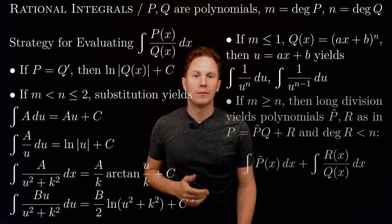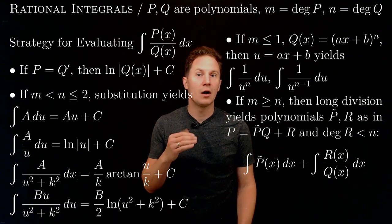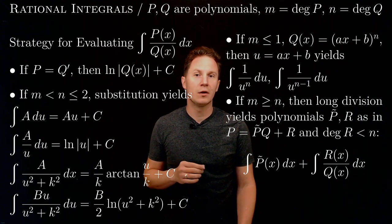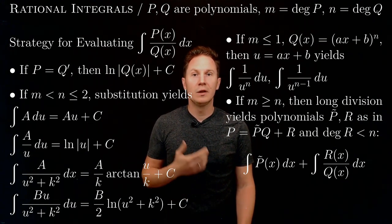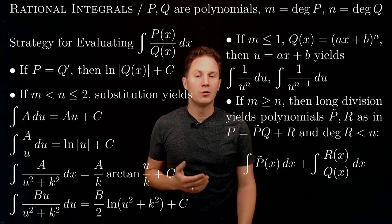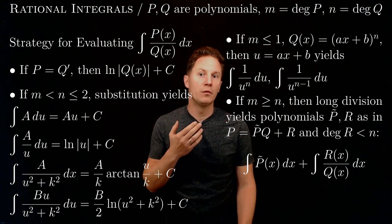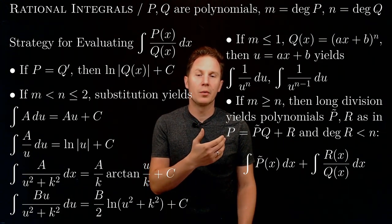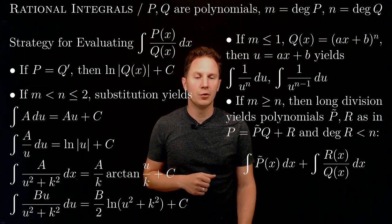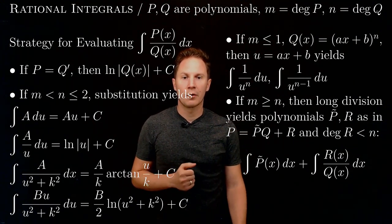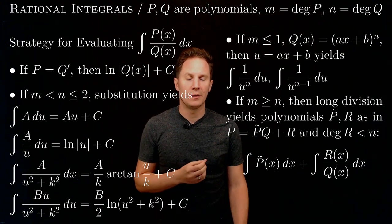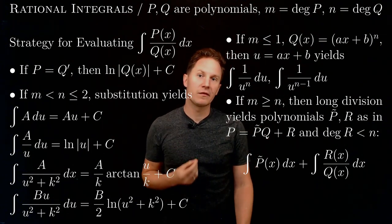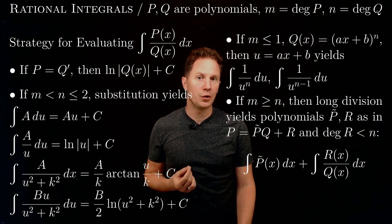If m, the degree of the numerator, is greater than or equal to the degree of the denominator, then we need to do long division to get P over Q be equal to a polynomial plus another polynomial r, the remainder, divided by Q so that our original integral turns into the one you see here, with now the degree of r being less than the degree of Q.